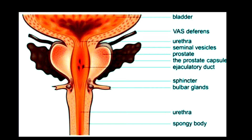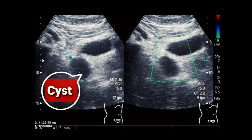The cyst of the seminal vesicle is not very common — it is a rare condition. This live case shows you the seminal vesicle cyst. This is the ultrasound picture of the seminal vesicle that is below the bladder. To locate this cyst, you have to place the probe of the ultrasound onto the suprapubic region. You have to press deep to see the prostate, cyst, and the bladder.